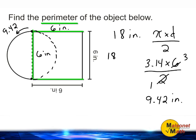So we are going to add 18 to 9.42 and that sum is going to give us the exact perimeter of the object shown. After adding these two values together we come up with a total of 27.42 inches. And that is the perimeter of our object.